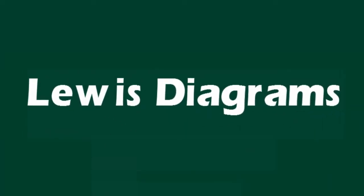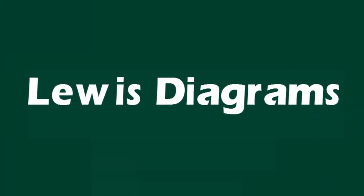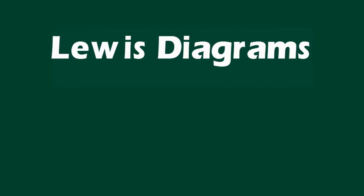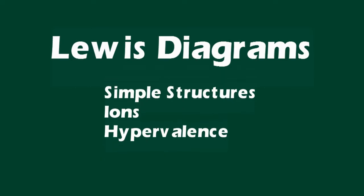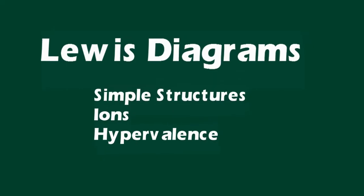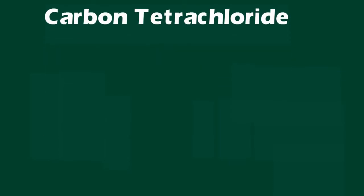This video demonstrates how to draw simple Lewis structures for molecules and ions. We're going to start with the structure for carbon tetrachloride.